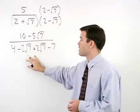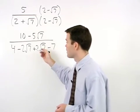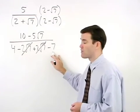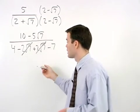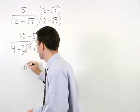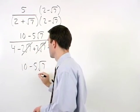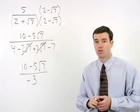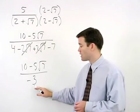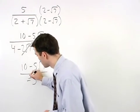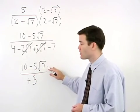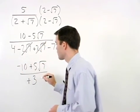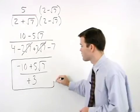Notice that in the denominator, the minus 2 root 7 plus 2 root 7 cancel each other out, and we have 4 minus 7, which is negative 3. So we have 10 minus 5 root 7 over negative 3. As your last step, I would change the minus sign in the denominator to a plus, which changes the sign of every term in the numerator. So we have minus 10 plus 5 root 7 over positive 3.